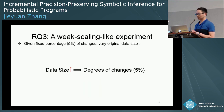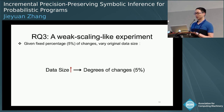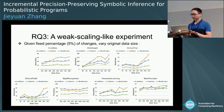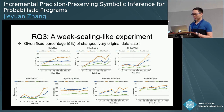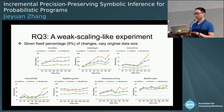For RQ3, we fix the percentage of changed data points at 5% and vary the original data size — a weak scaling experiment. As data size increases, the speedup also increases, demonstrating the performance advantage of incremental inference. This is because PSI spends more time computing and simplifying PDFs as the number of loop iterations grows, whereas our incremental inference concerns only the changed 5% of iterations.